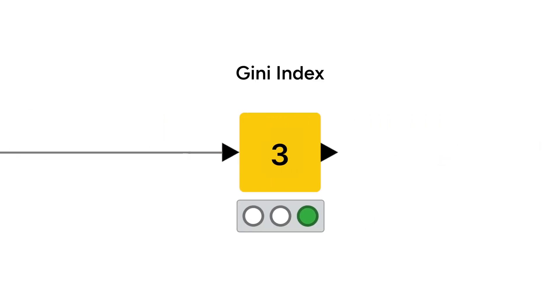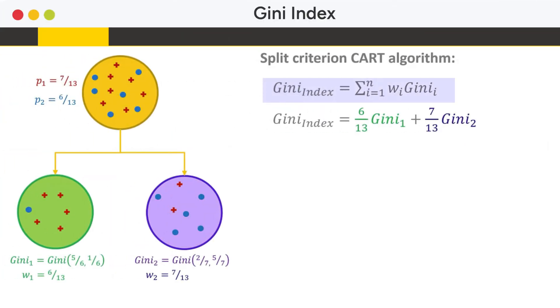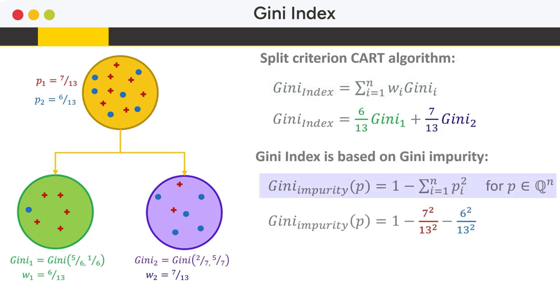Another measure for purity, or actually impurity, is the Gini index, used by the CART algorithm. It is based on the Gini impurity defined as 1 minus the sum of the squares of the class probabilities of a data set.